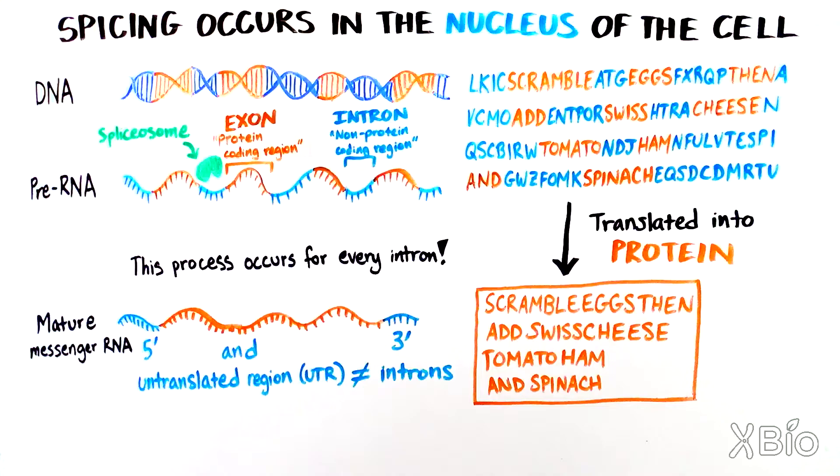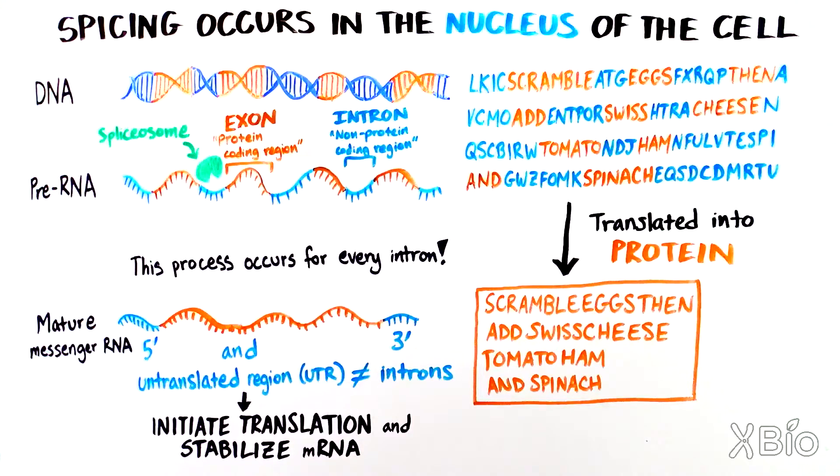Although they do not make proteins, these UTRs have important functions in the initiation of translation, which is the process of making protein from RNA, and in the stabilization of the mRNA molecule to prevent degradation.